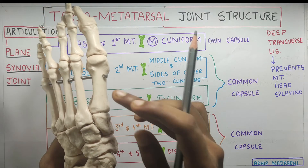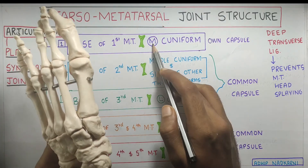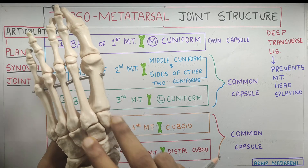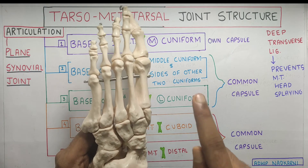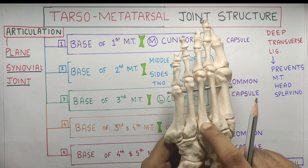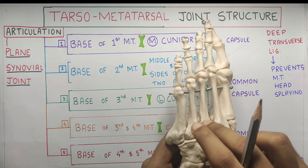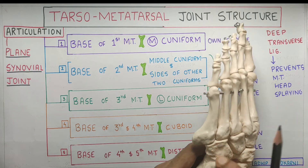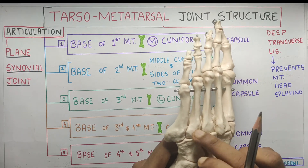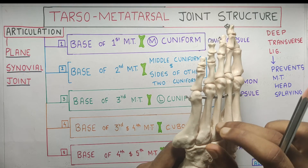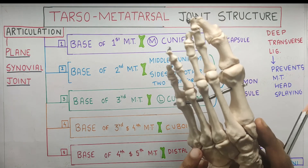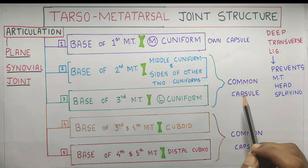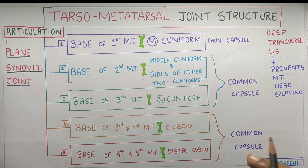To summarize: the first metatarsal articulates with the medial cuneiform and has its own capsule. The second shares articulation with the middle cuneiform and sides of the other two cuneiforms. The third articulates with the lateral cuneiform. The third and fourth share the lateral cuneiform and cuboid, while the fourth and fifth share the cuboid. The second and third share a common capsule; the fourth and fifth share their own capsule.